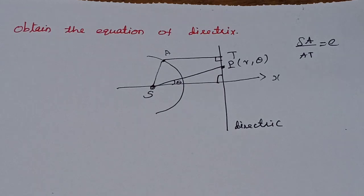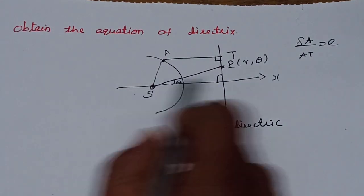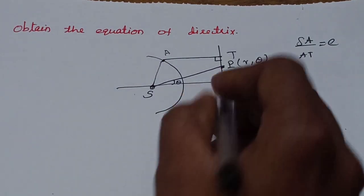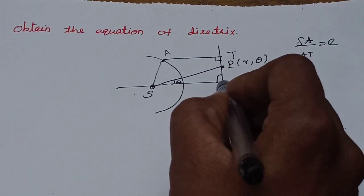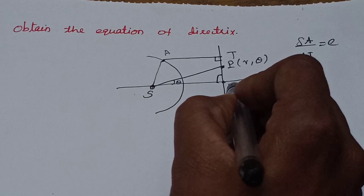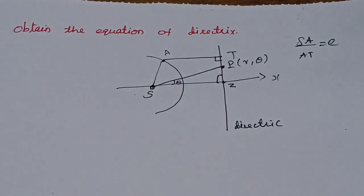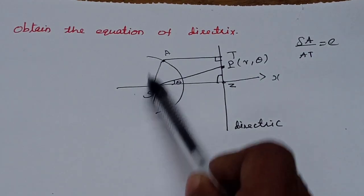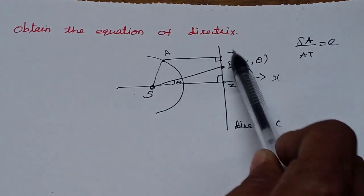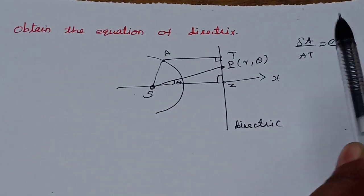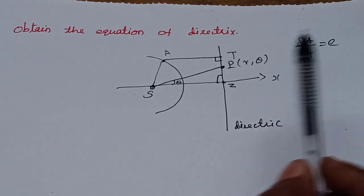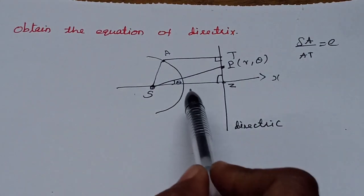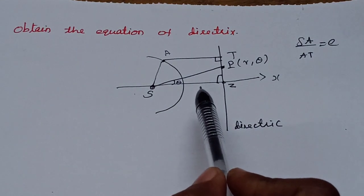So this is the basic setup. We will call the focus S. The directrix has a foot of perpendicular which we call Z. Now, what is the eccentricity? The ratio SA by AT equals e. So we will call that e.